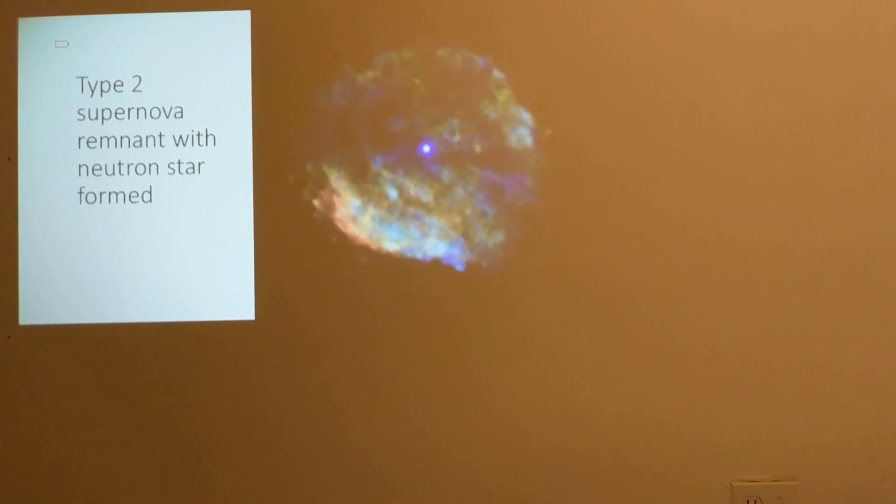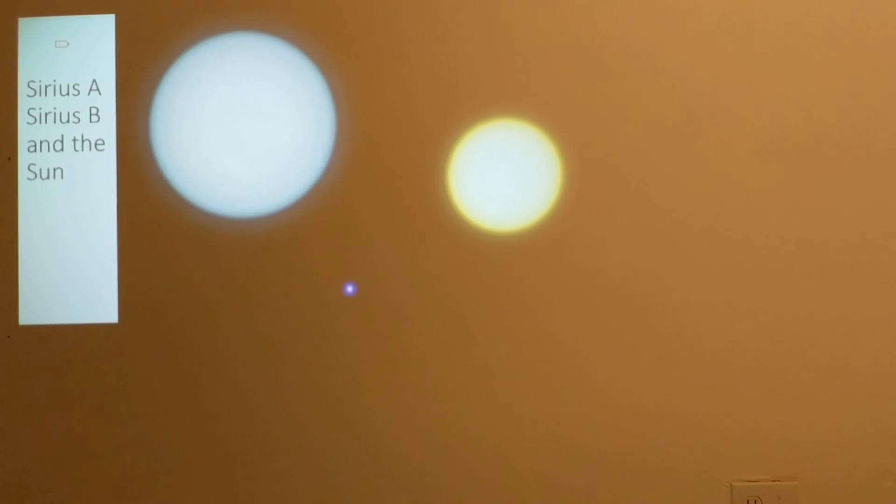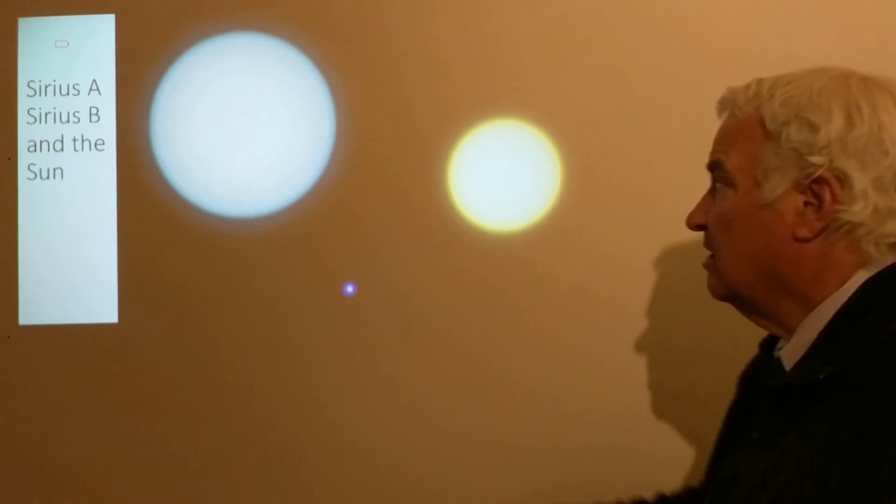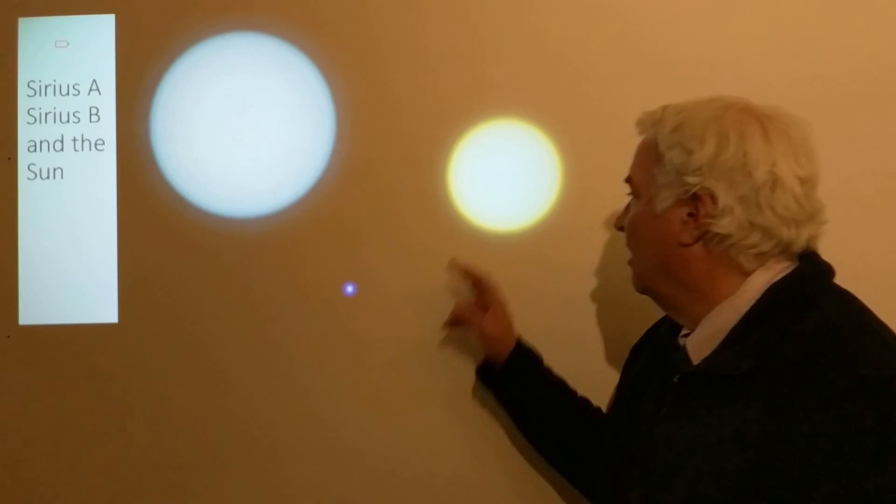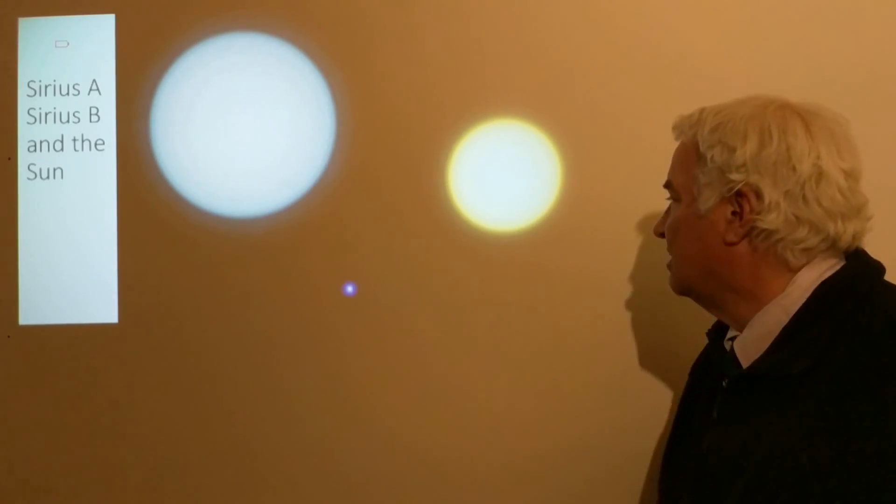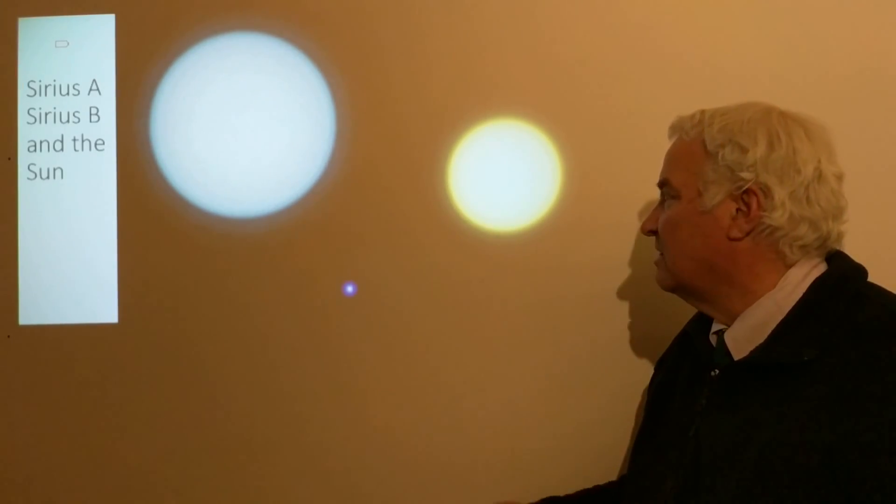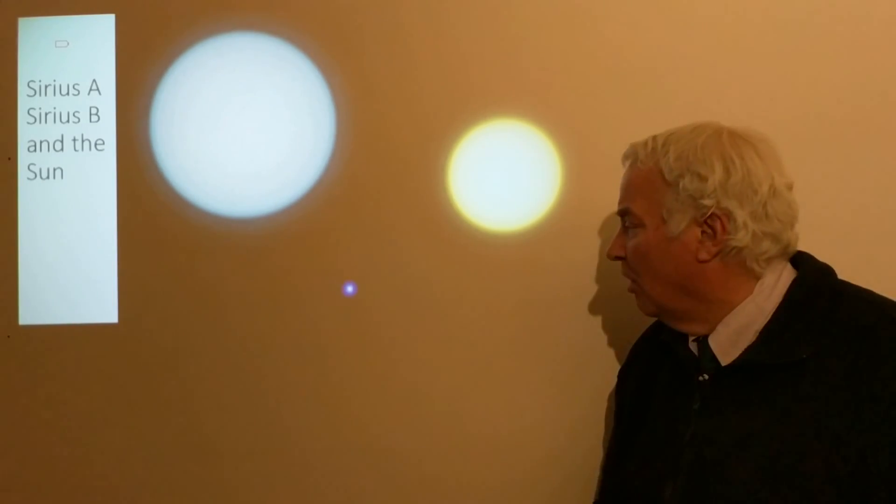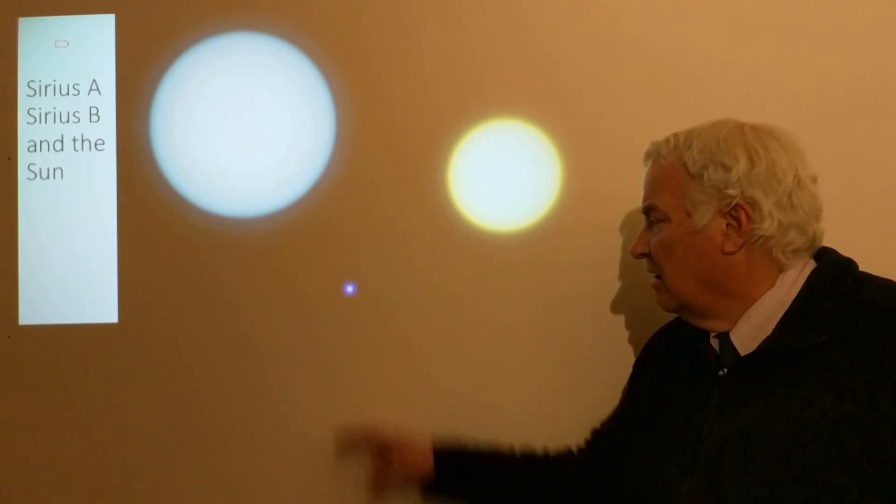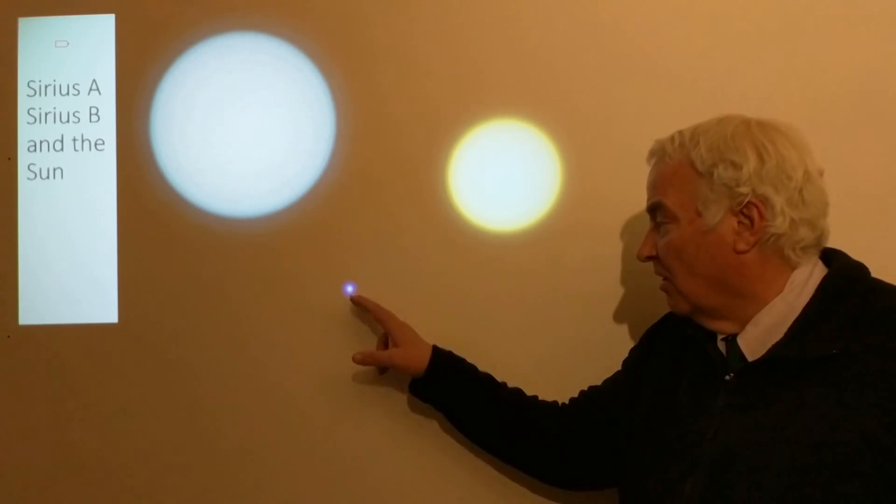You might think about how big is a neutron star. If we consider Sirius A, which is the brightest star in the sky, the Sun in comparison, and the size of a white dwarf—this is Sirius B, the white dwarf, about the size of Earth.